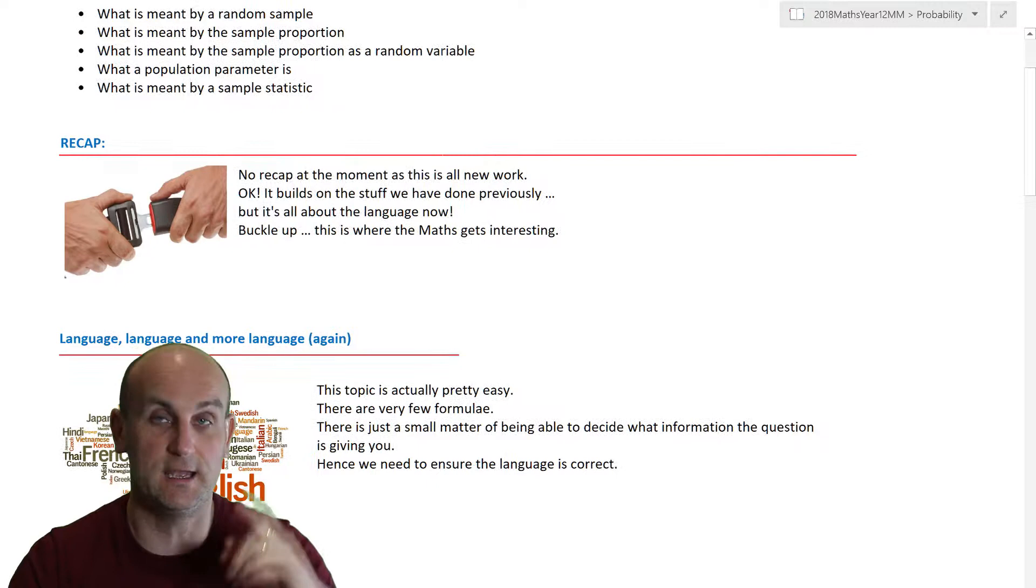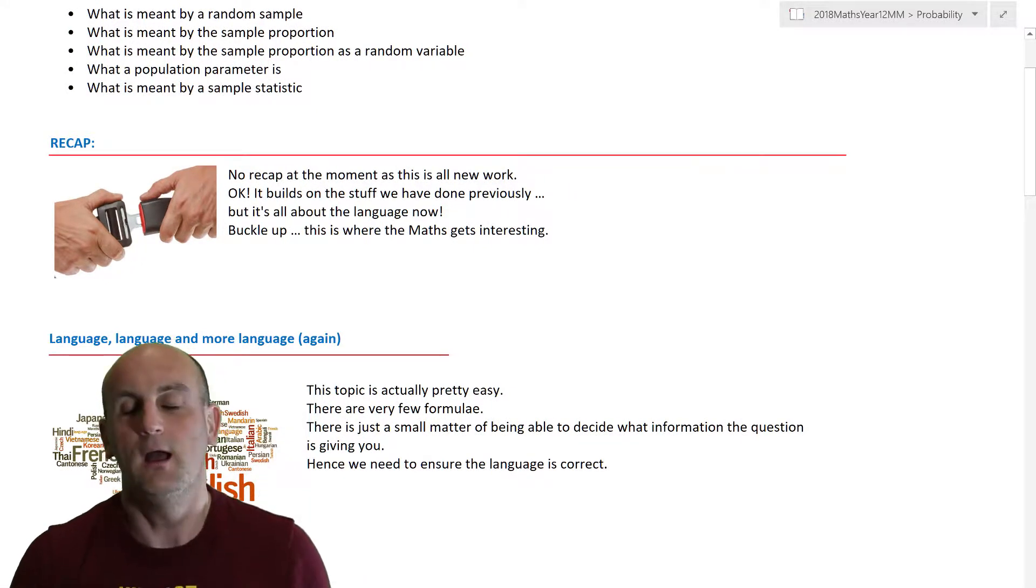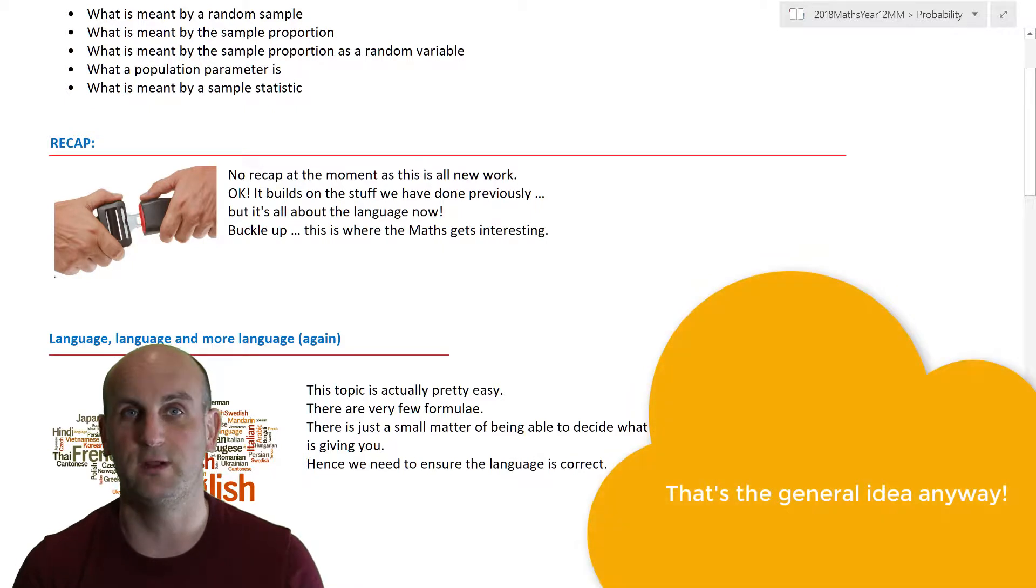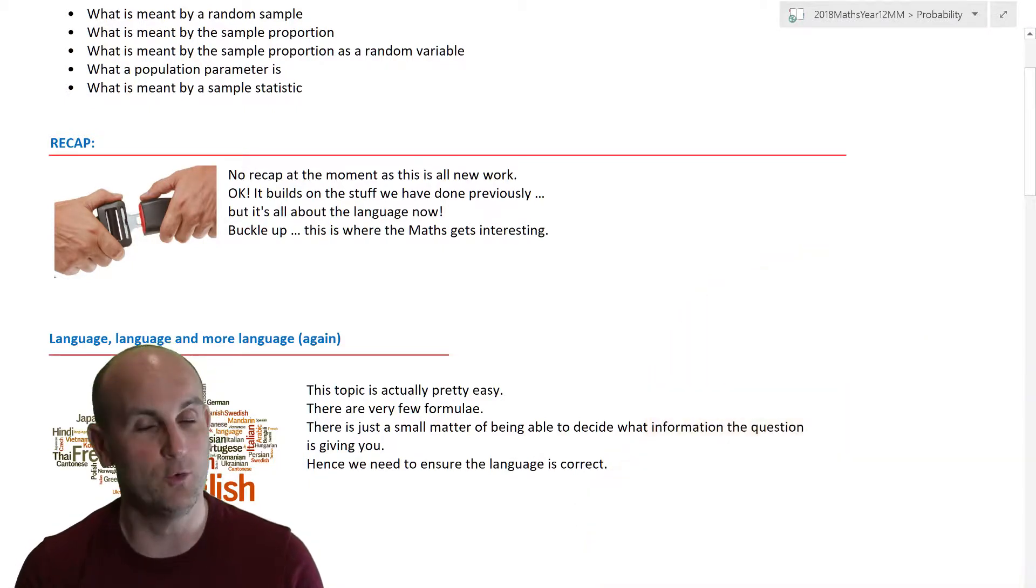Now by the end of this lesson, as I say just above me as normal, we're going to look at making sure you understand the language that is used in probability. So for example, random samples, sample proportions, population proportions, population parameters and sample statistics. All of those things, if you understand what they are, then any questions that come up later on, you should be able to decode them and understand them straight away.